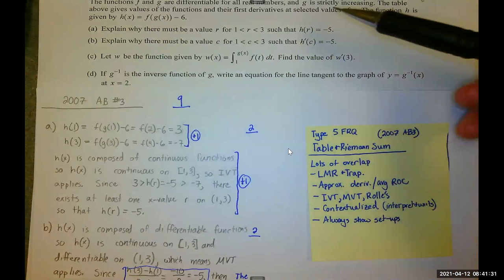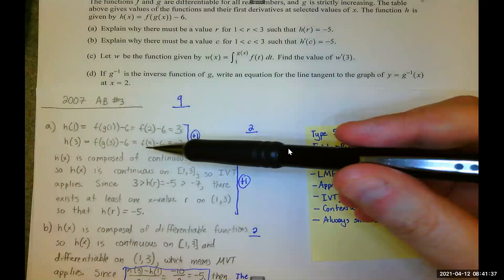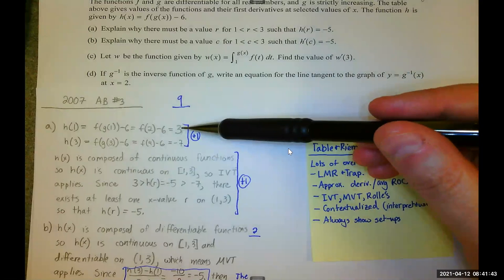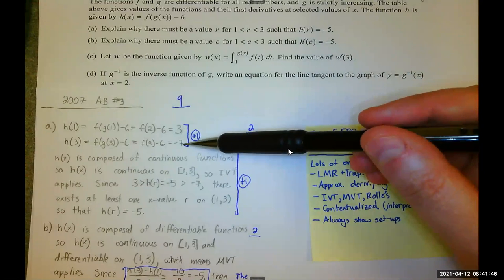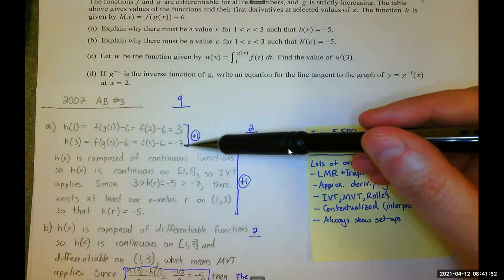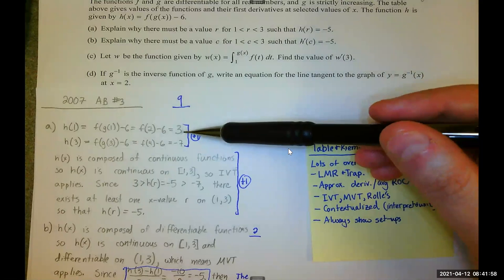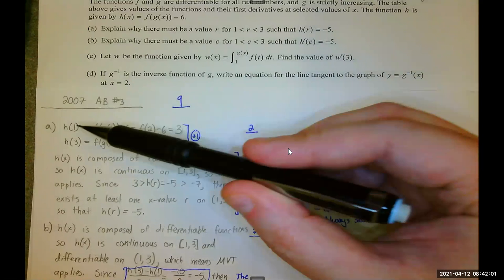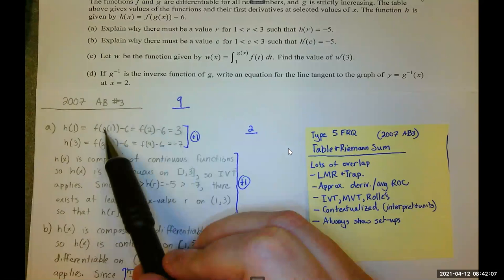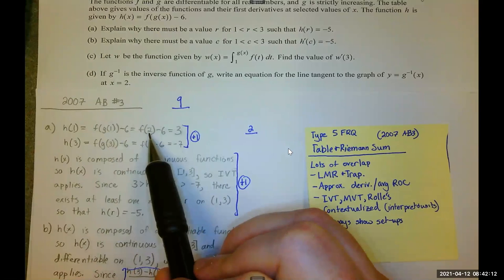So, that means H has to be continuous on the closed interval. H is, because F and G are differentiable. Consequently, the intermediate value theorem applies. Now, we need to make sure that we consider H at 1 and H at 3, because negative 5 has to be between these for us to have a conclusion. If negative 5 is not between these function values, we don't have a conclusion. But, H of 1 is 3, and I got that by replacing X with 1, reading the table for G, getting G of 1, which is 2, doing F of 2 again from the table. F of 2 is 9. So, I got 3.